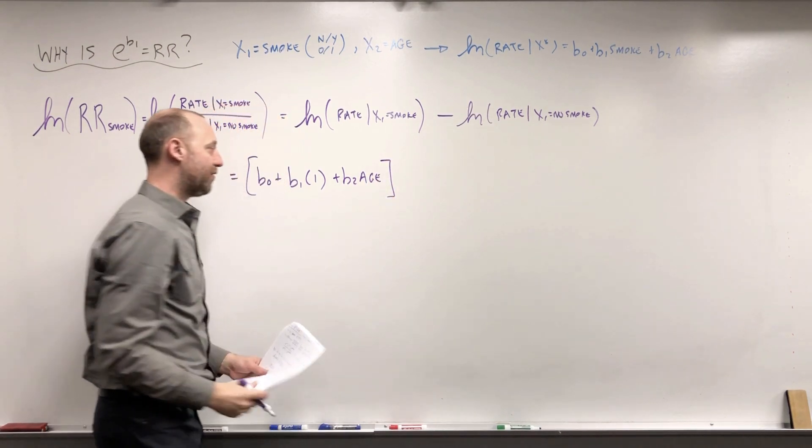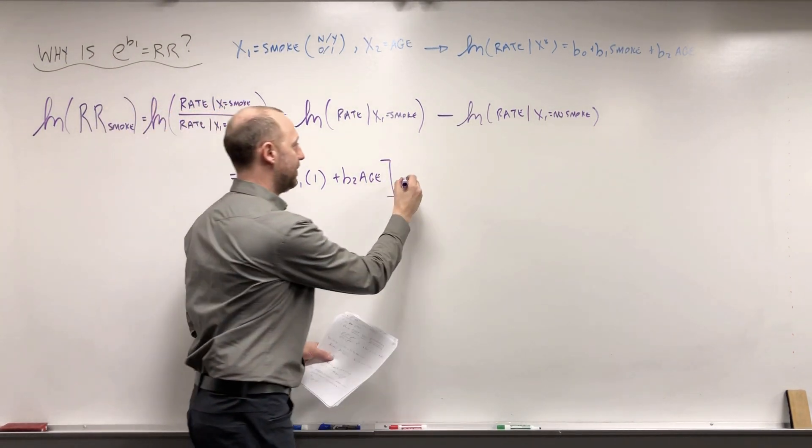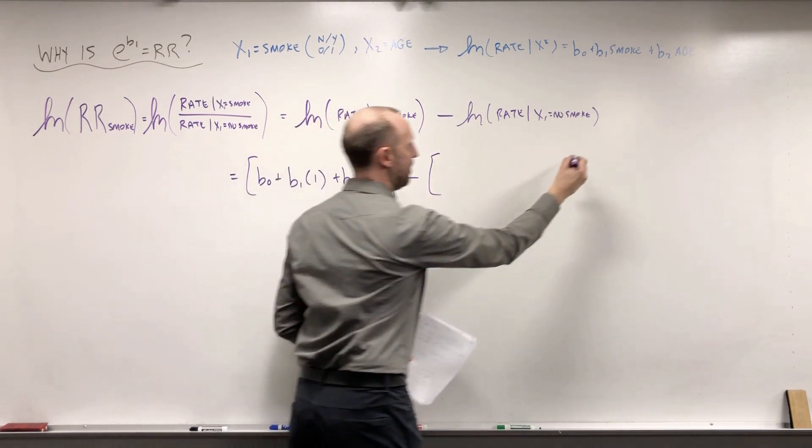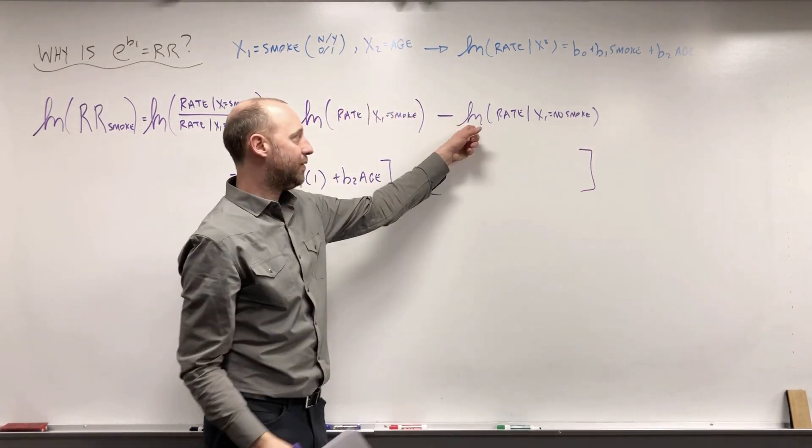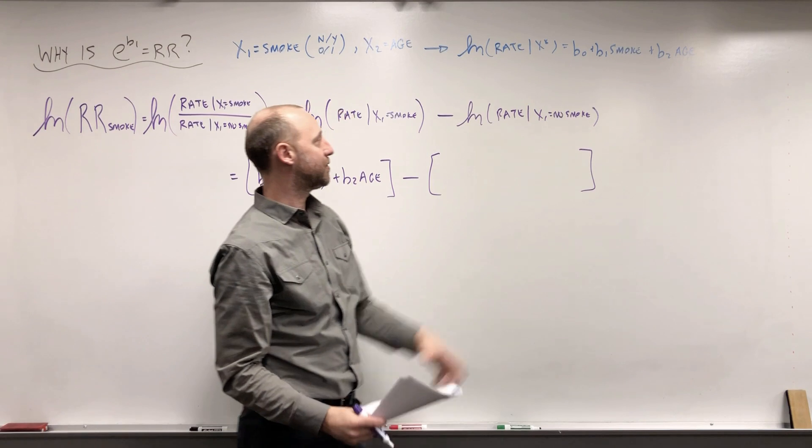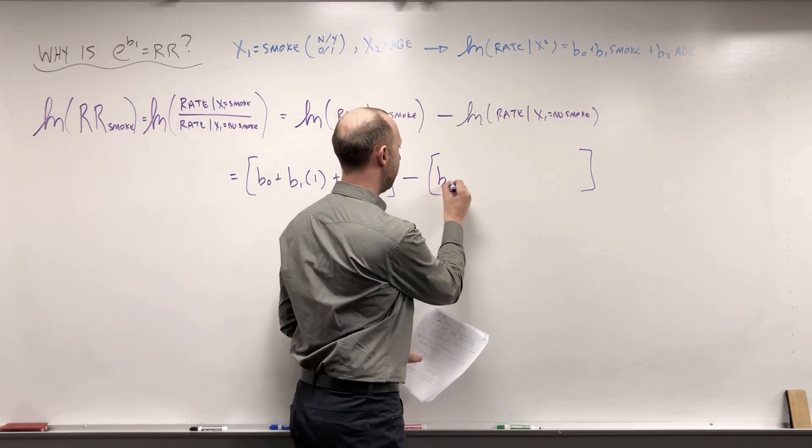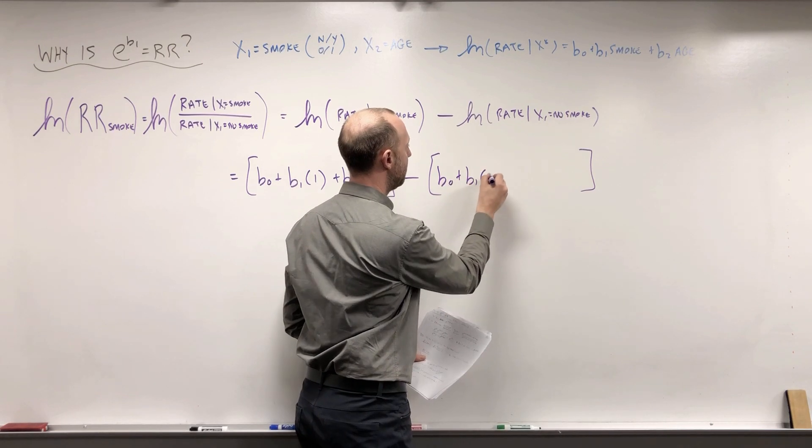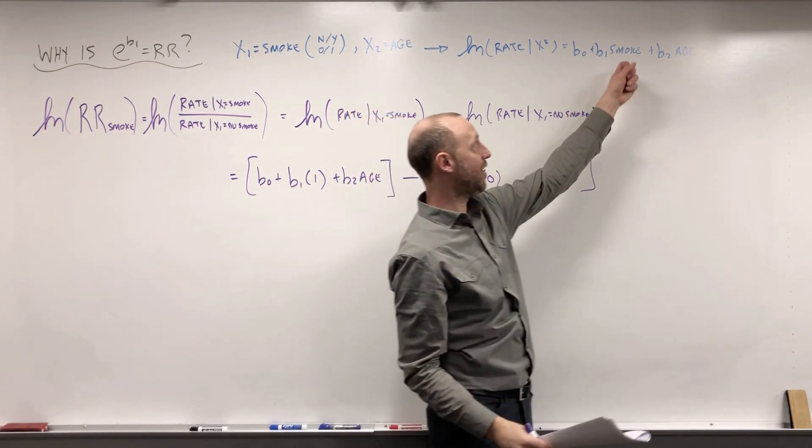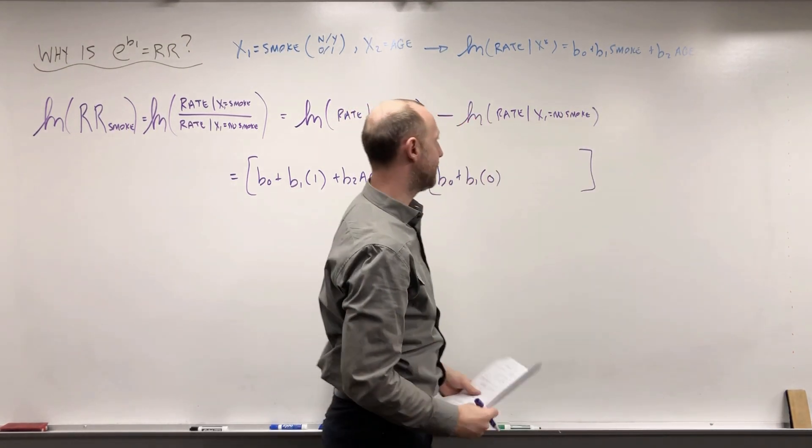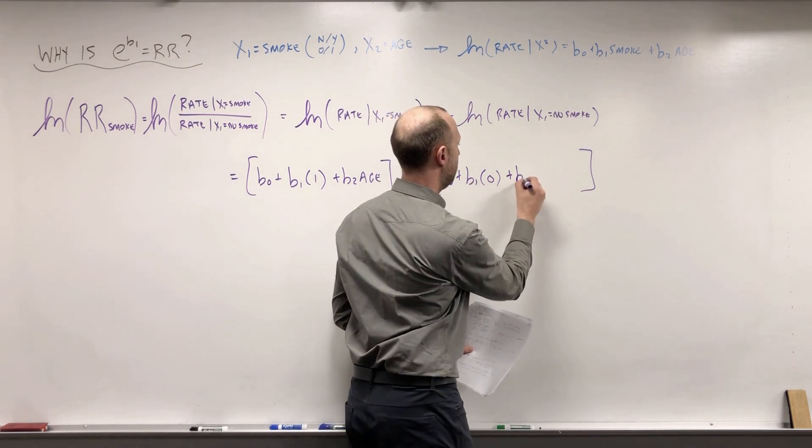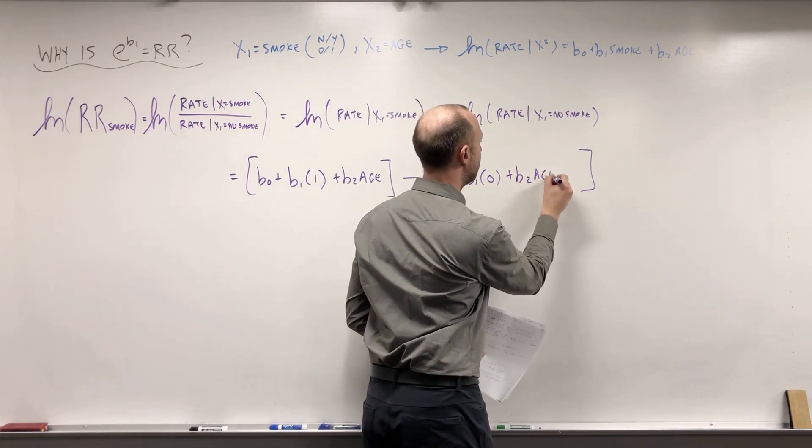So I'm just going to leave it that way for now, whatever their age is, minus this part here, what's the log rate given they do not smoke. The log rate given the x's is b0 plus b1 now times 0, if they do not smoke this indicator takes on a value of 0, plus b2 times whatever their age is.